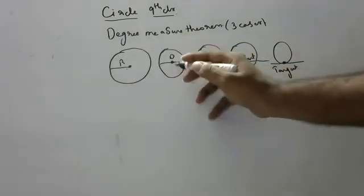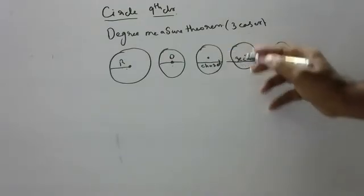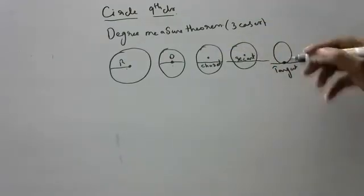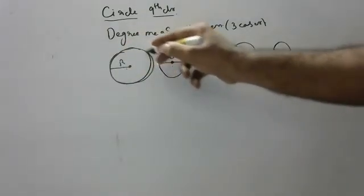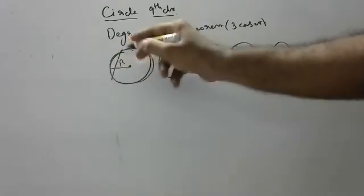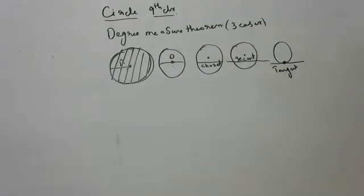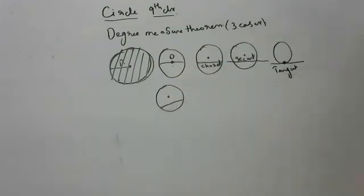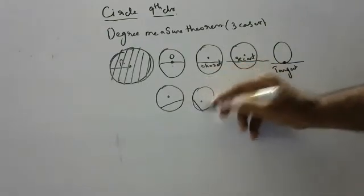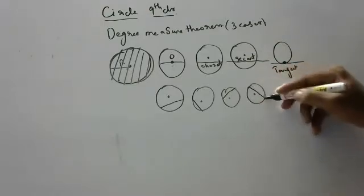If it is not touching the center, it is a chord. If the chord is extended on both sides, it becomes a secant. If the secant is brought down to touch at one point, it is called a tangent. You should know what a chord is — a line not passing through the center. A chord can be in any direction, and infinite chords are possible.